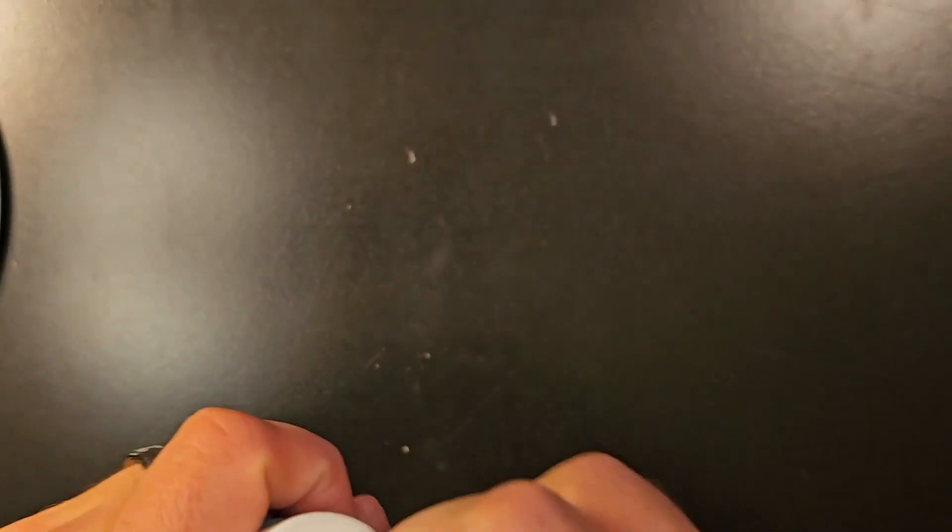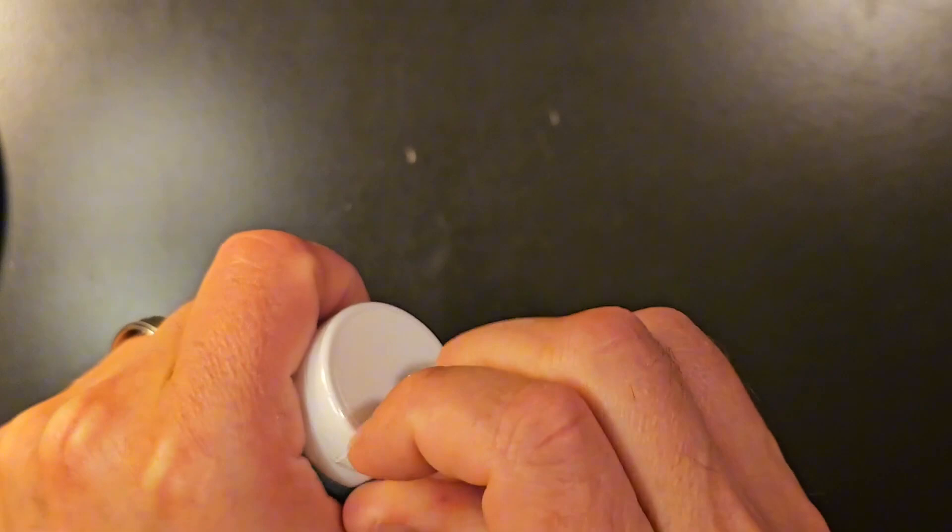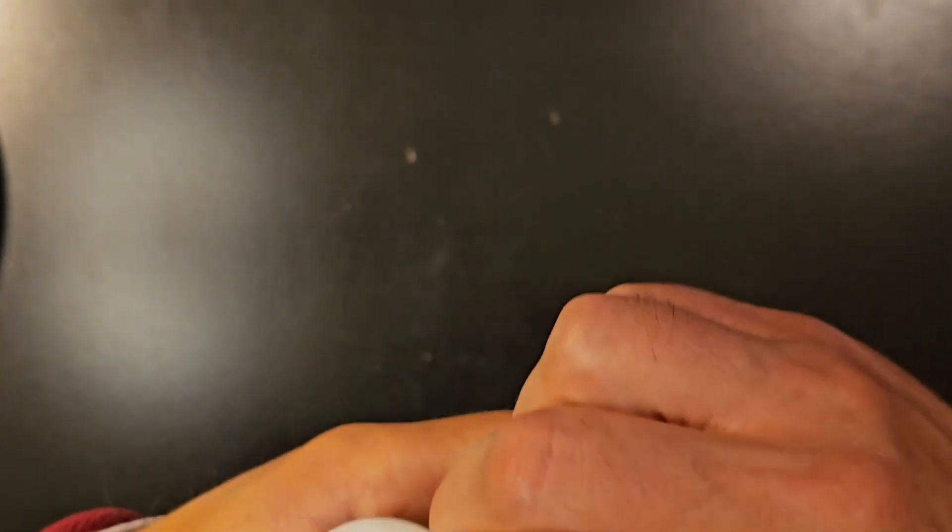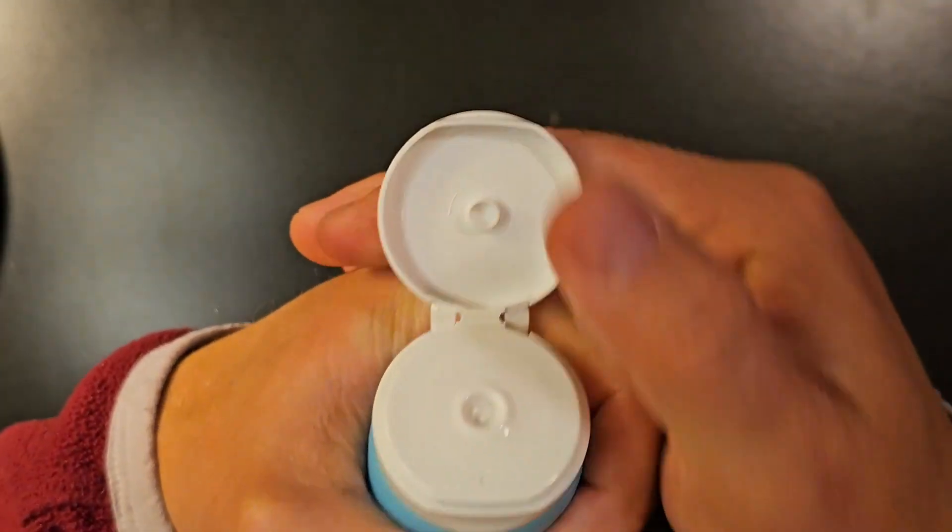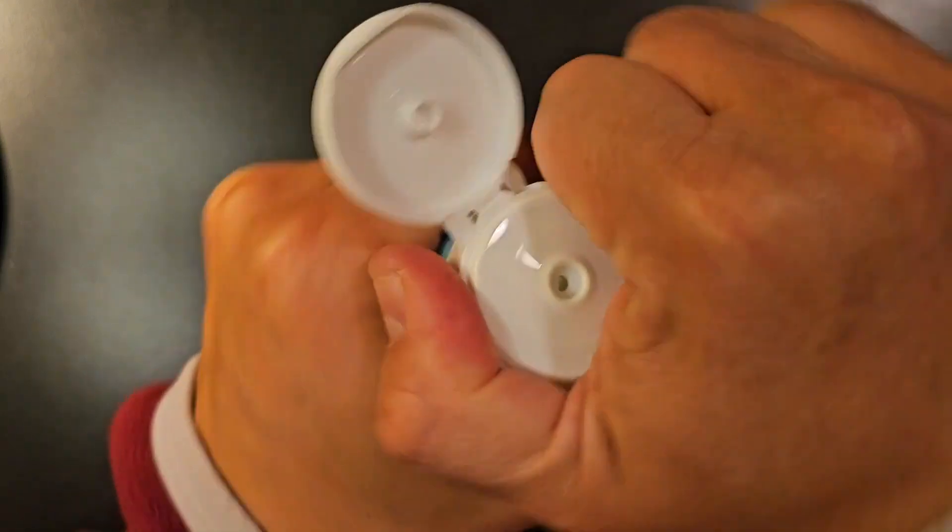Take the plastic covering off on the outside here of the top. It's perforated right here, and tear that off. Once you get that torn off, you can flip the top here, and then we'll see...